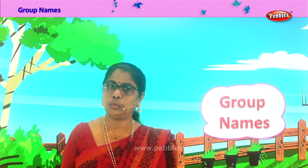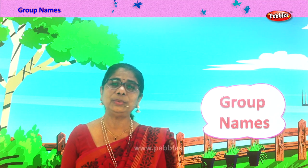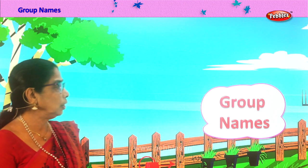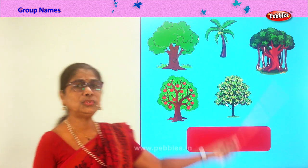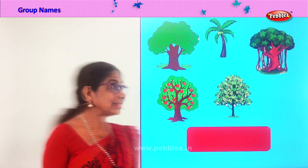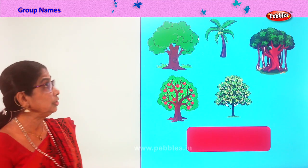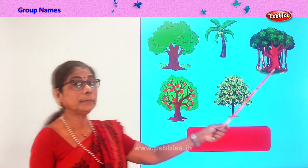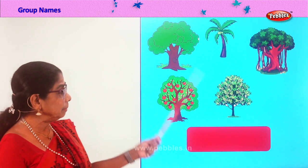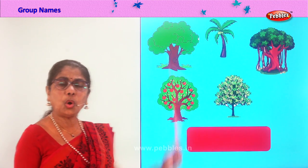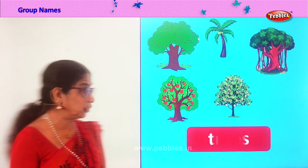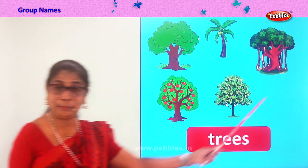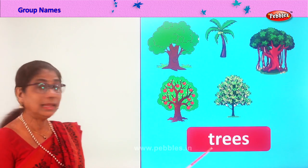Let's look at our first group and decide on what name we call them together. Look — 1, 2, 3, 4, 5. What do you see here? What are they? Yes, this is an apple tree, coconut tree, pannion tree, neem tree and so on. All are the same kind. What do you call them? We call them trees. So the group name for this is trees.